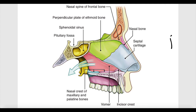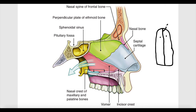Looking at the nasal cavity from an anterior view, we can see it is divided into two separate cavities by a wall called the nasal septum. Each half of the nasal cavity has a roof, a medial wall, a lateral wall, and a floor, which we will discuss separately.